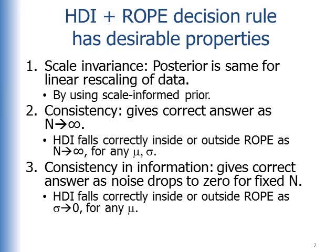The HDI in ROPE decision rule also has consistency in information. This means that it gives the correct answer as the noise drops to zero for a fixed sample size. The HDI falls correctly inside or outside the rope as that noise goes to zero for any true value of the mean.